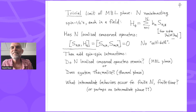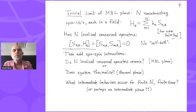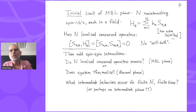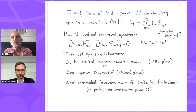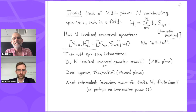Now we're going to add some interactions between the spins. The question is: do we keep the structure of N localized conserved operators like we have in this trivial limit? If so, even with interactions, you're in the many-body localized phase — the non-trivial part of MBL. The alternative is that the interactions are enough to cause the system to thermalize, destroying these localized conserved operators and the system going to thermal equilibrium. One can then ask: in a finite system and finite time, what intermediate things happen between these two possibilities? Perhaps there's even an intermediate phase, although there's really no concrete proposal for that.